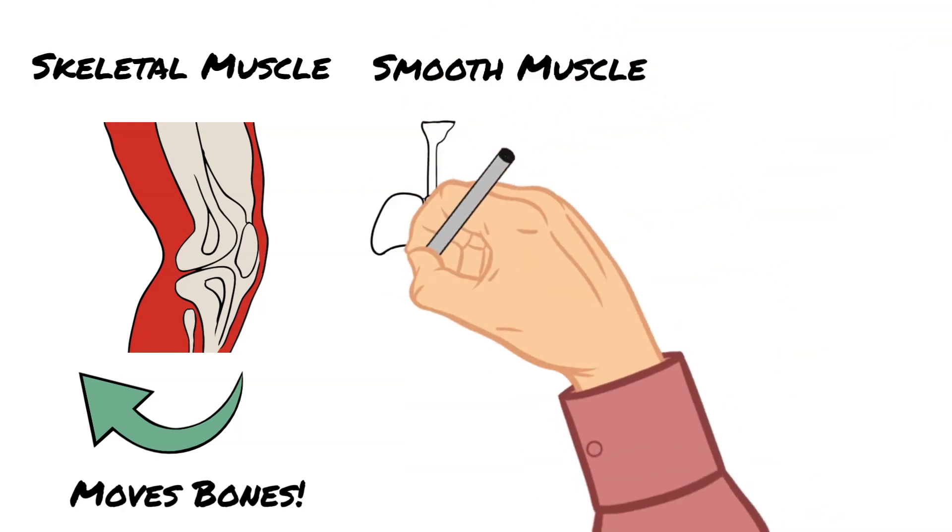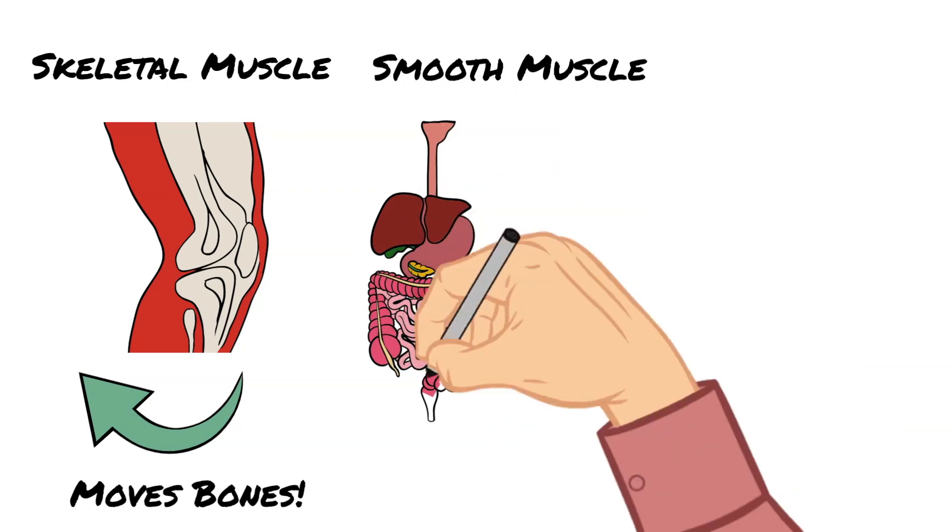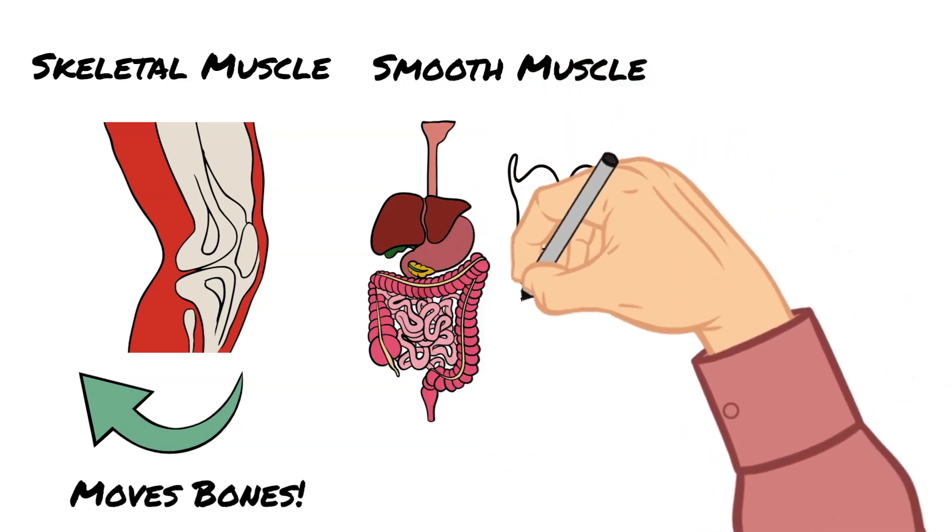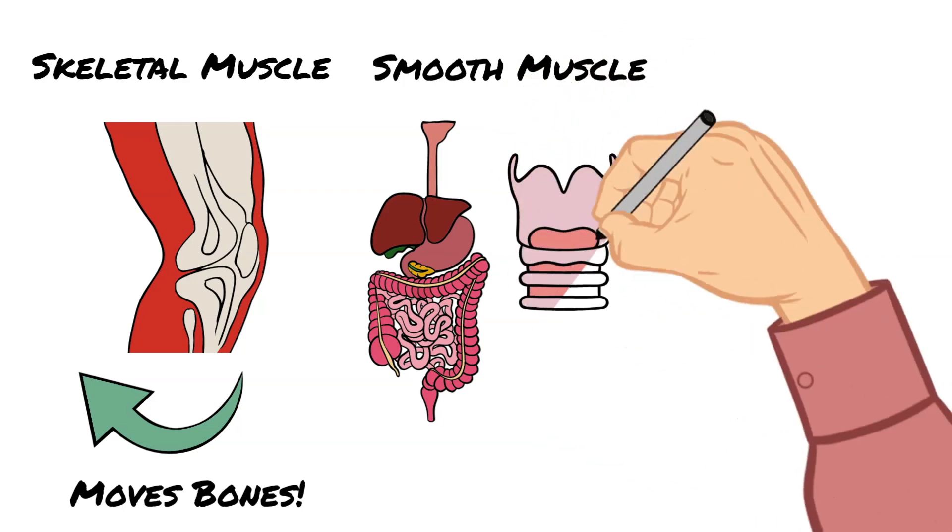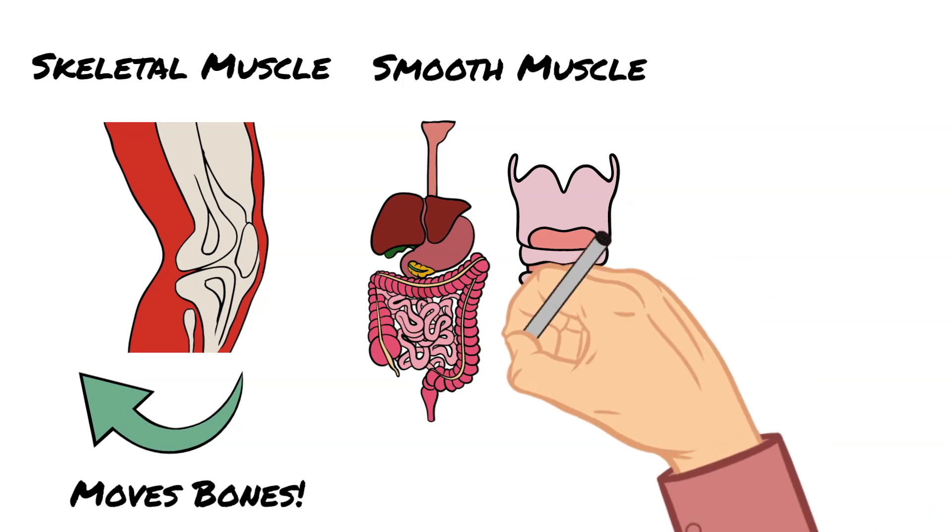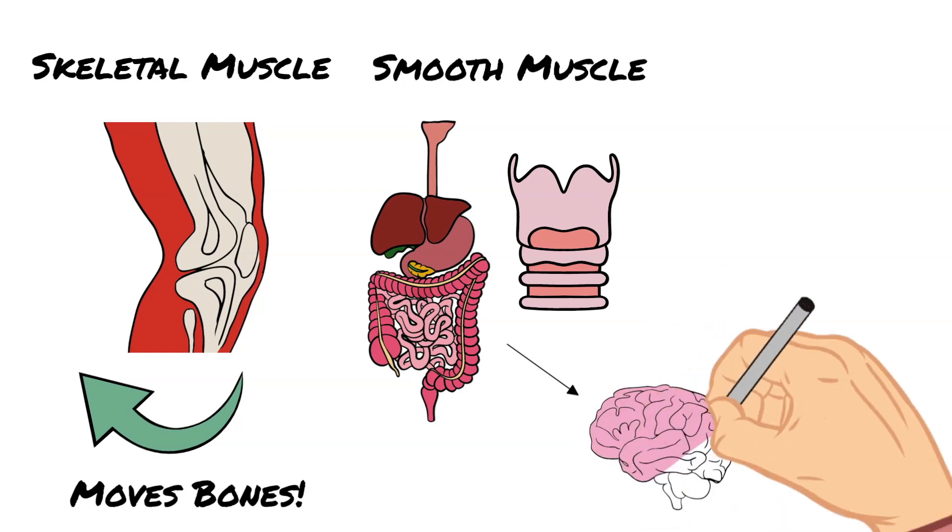Smooth muscle is found in the hollow organs such as the stomach, the bladder, the airways, and in the walls of most blood vessels. Smooth muscle is controlled by the autonomic nervous system. This simply means that it cannot be controlled consciously. You cannot think to make your stomach digest.